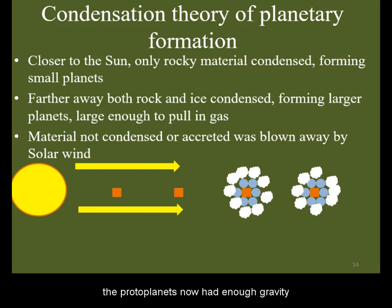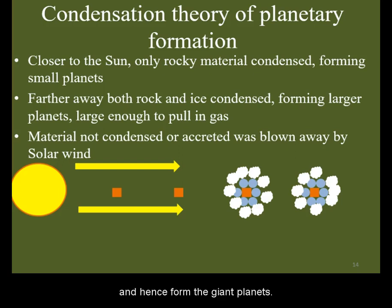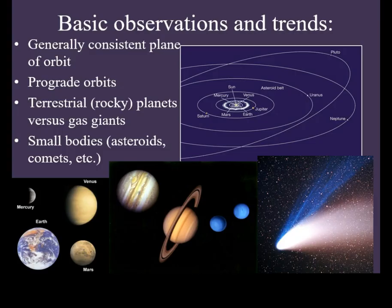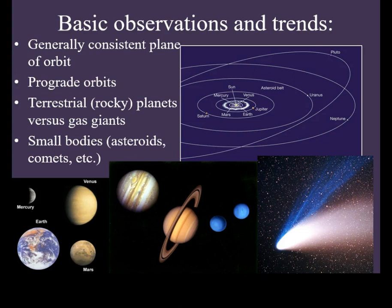The protoplanets now had enough gravity to gravitationally start pulling in hydrogen and helium, and hence form the giant planets. This is why we observe small, rocky, terrestrial planets close to the sun, and low-density giant planets far away from the sun.